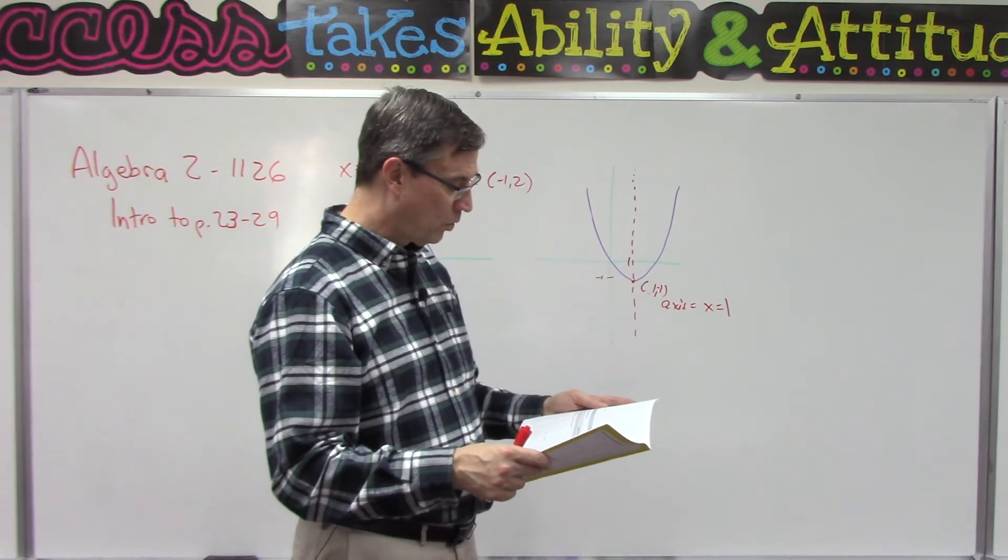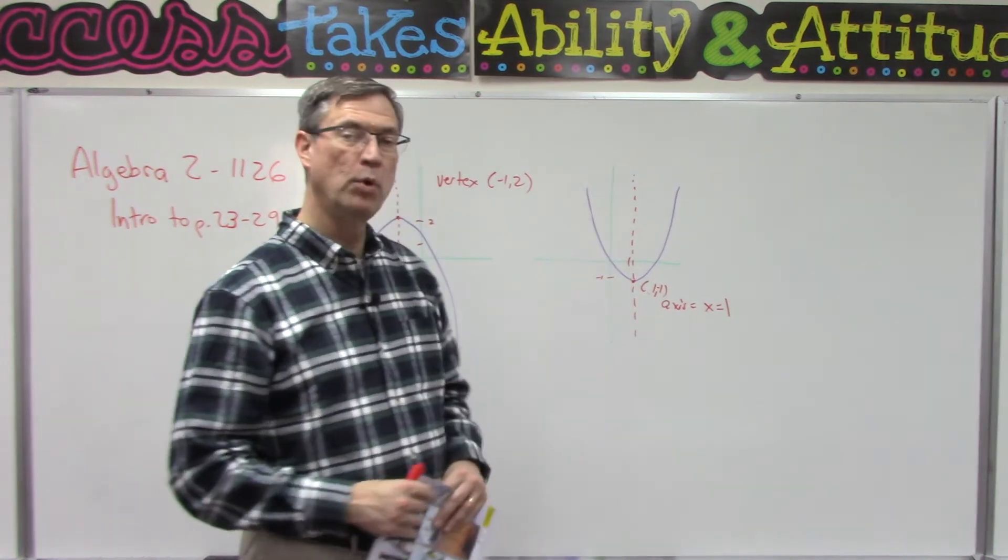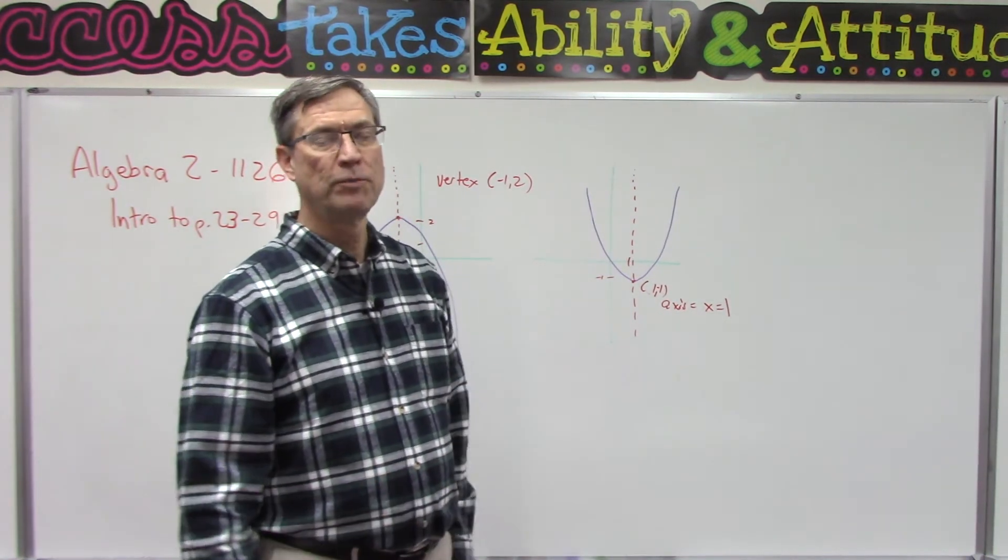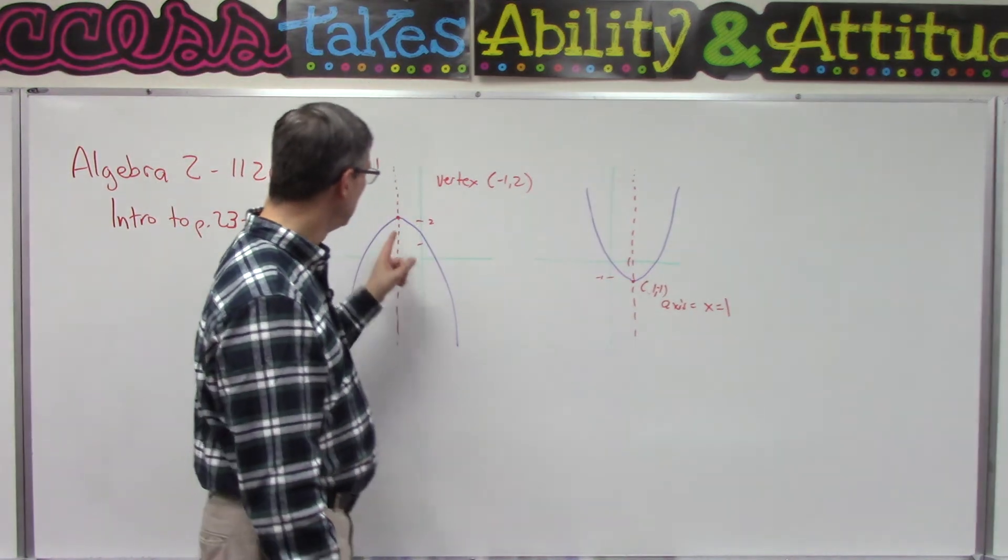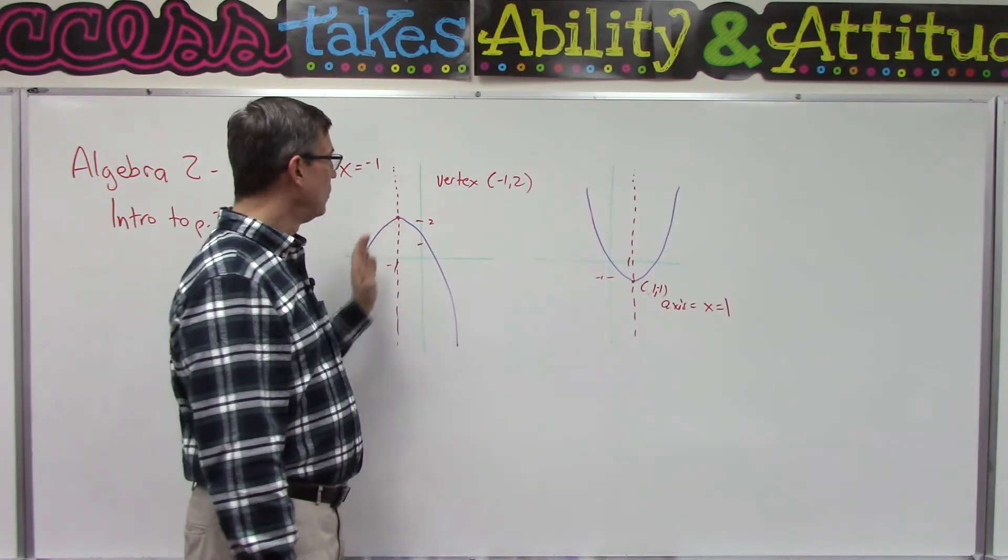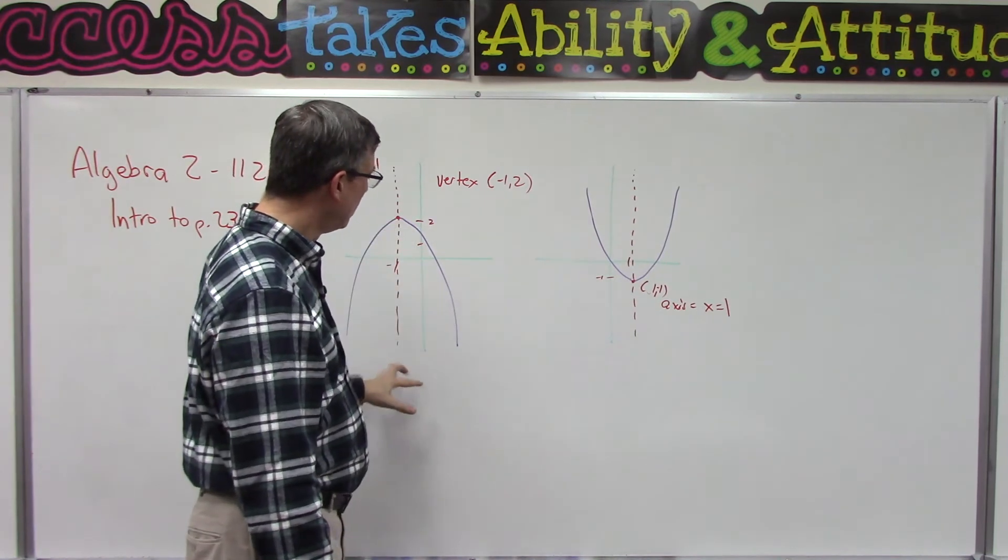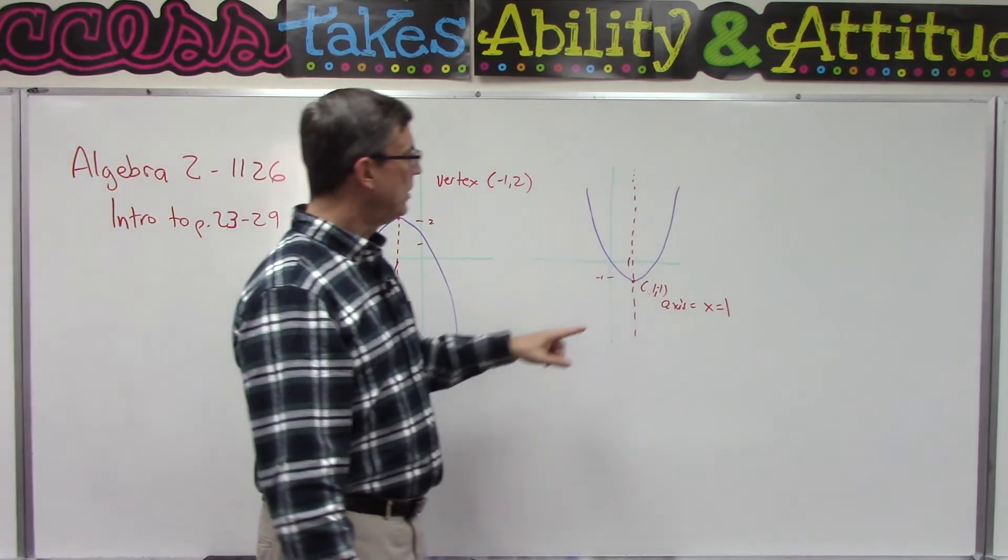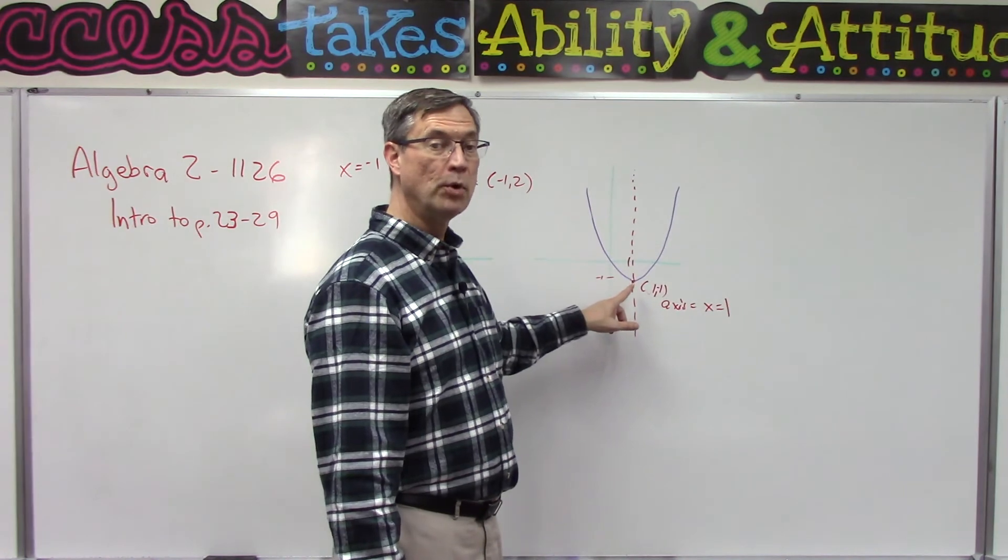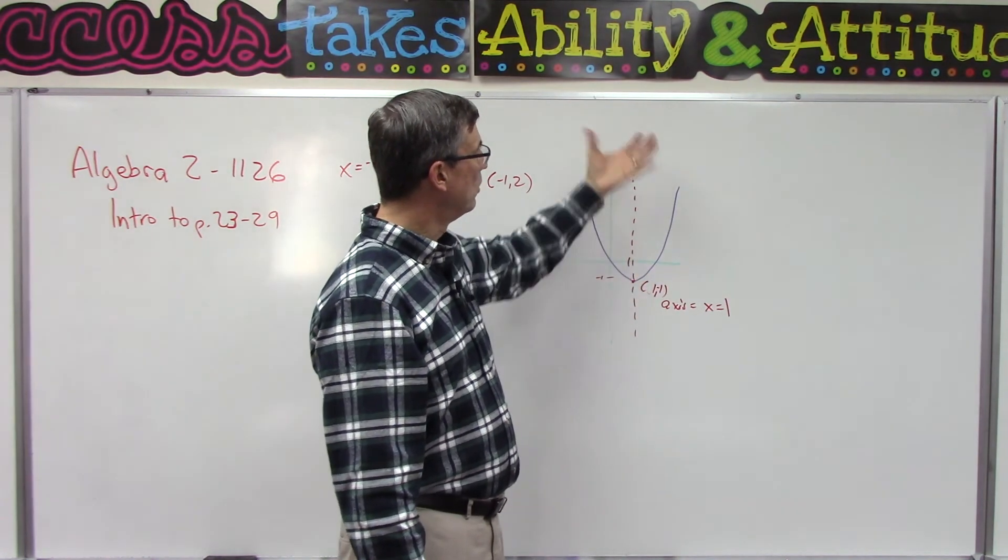Page 28 is called the maximum and minimum points. Again, it's just terminology to get used to. This over here is the top point, so we would call this the maximum point—all the other points are below it on this graph. And then this is called the minimum point because all the points open upwards from there.